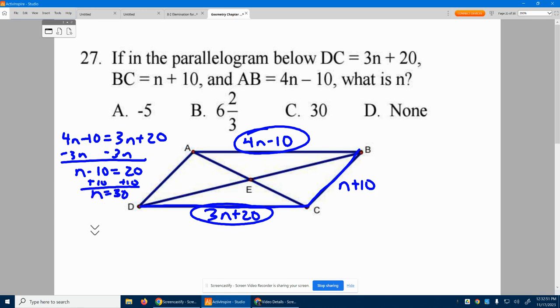Now, what does it ask? It says, what is N? N is 30. Choice C. Boom. 27 is done.